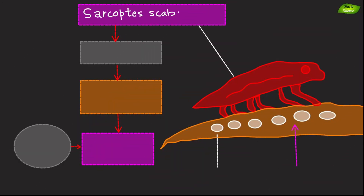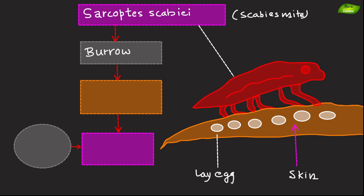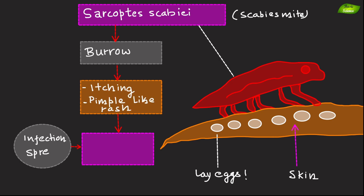Sarcoptes scabiei, the scabies mite, burrows inside the skin to lay eggs, leading to intense itching and a pimple-like rash. The infection spreads through close physical contact.